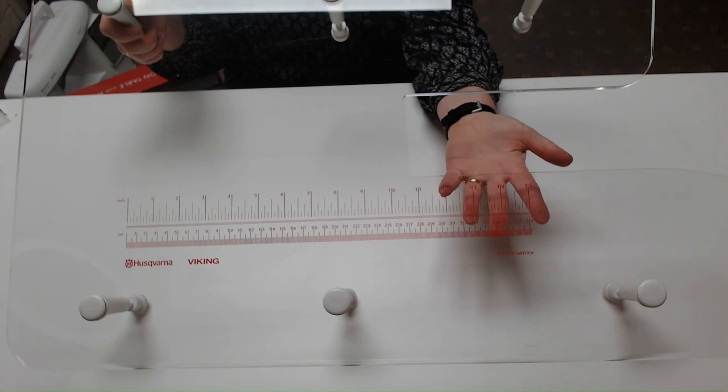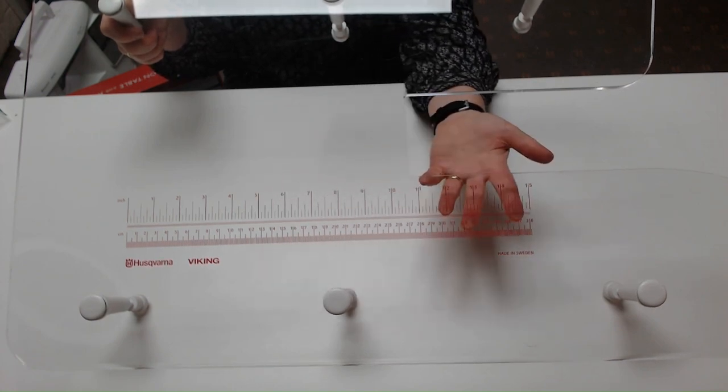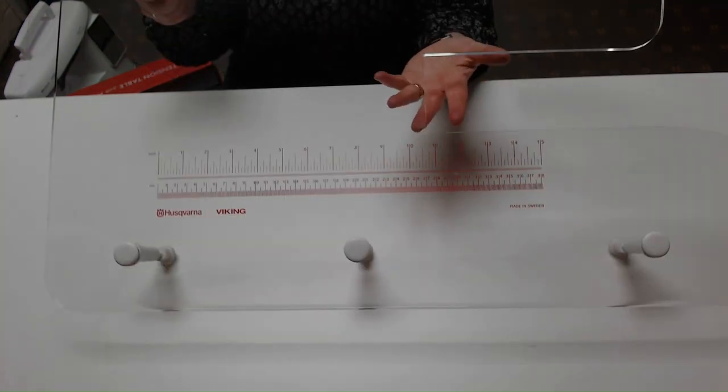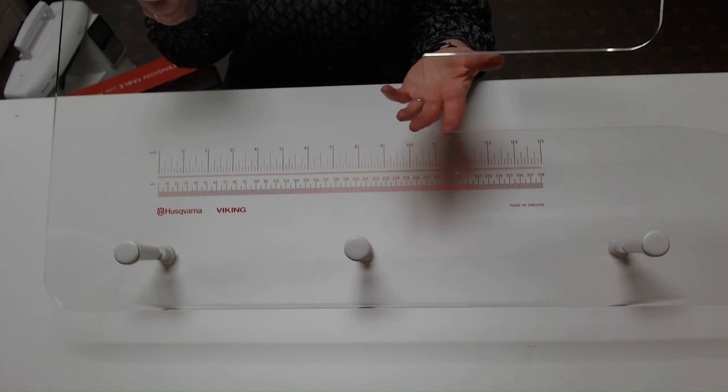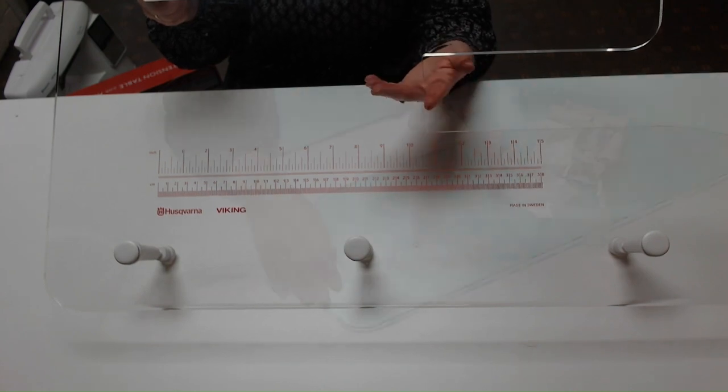It has tape markings on it as well, so you've got a size guide. This is a really great table for quilters because of its size—it's 28 inches by 18 across.